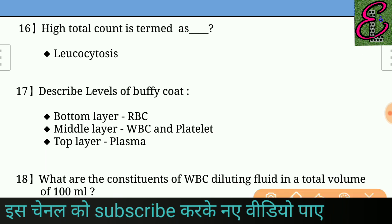Question number seventeen: Describe the levels of the buffy coat. Answer: The bottom layer contains RBC, the middle layer contains WBC and platelets, and the top layer contains plasma.